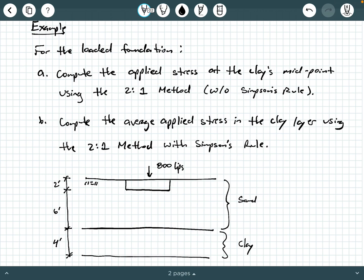In this example, we are given a loaded foundation and we are asked to do two things. Part A says to compute the applied stress at the clay's midpoint using the 2-to-1 method without Simpson's rule. Part B then says compute the average applied stress in the clay layer using the 2-to-1 method with Simpson's averaging rule.